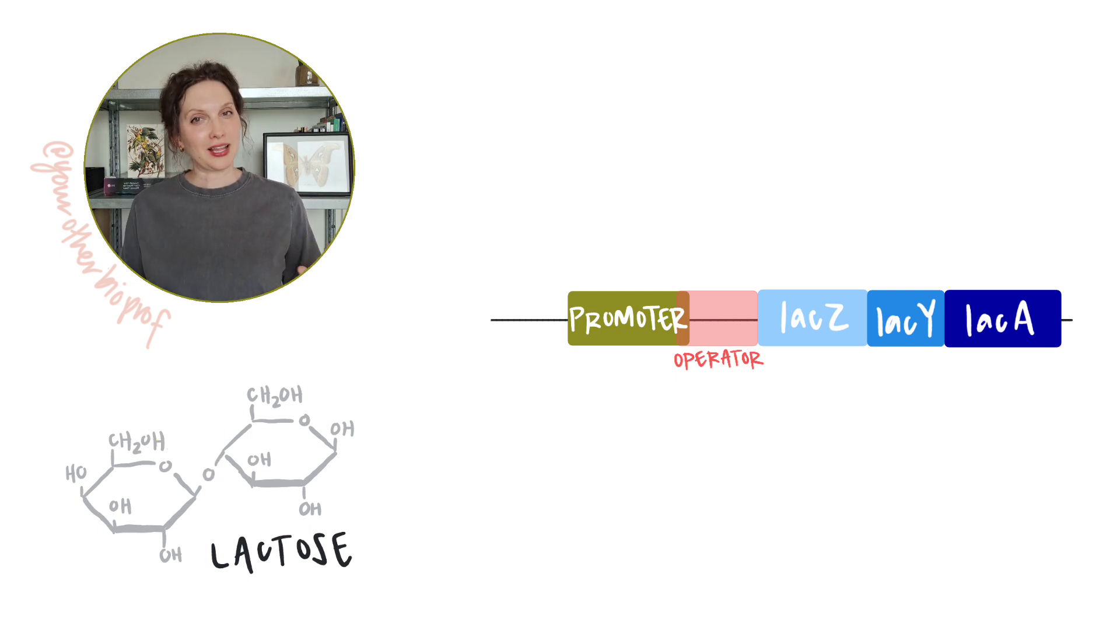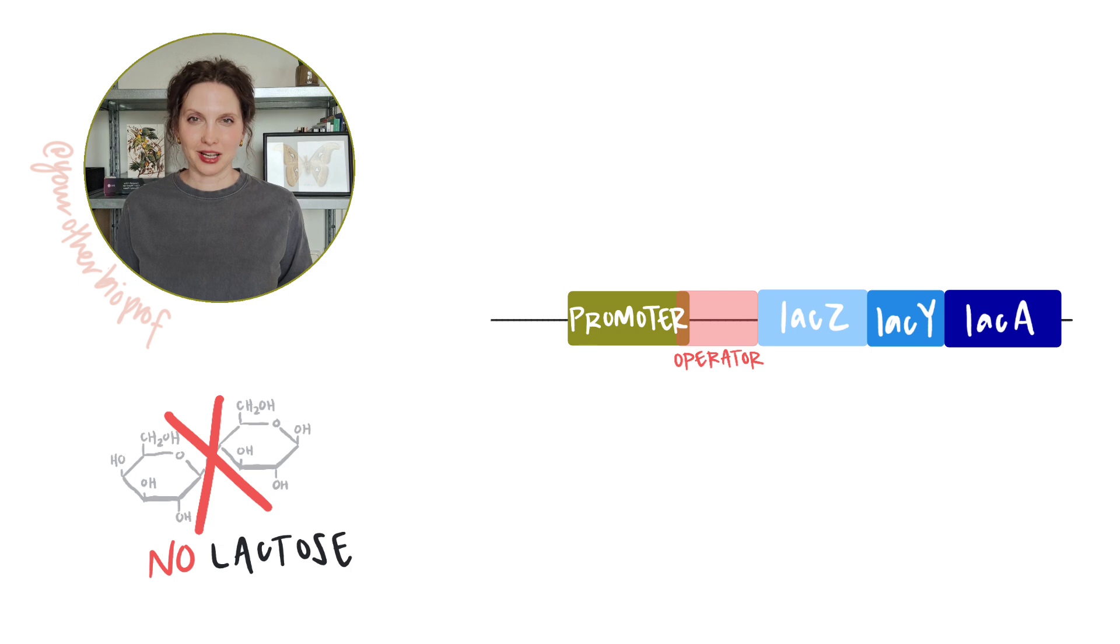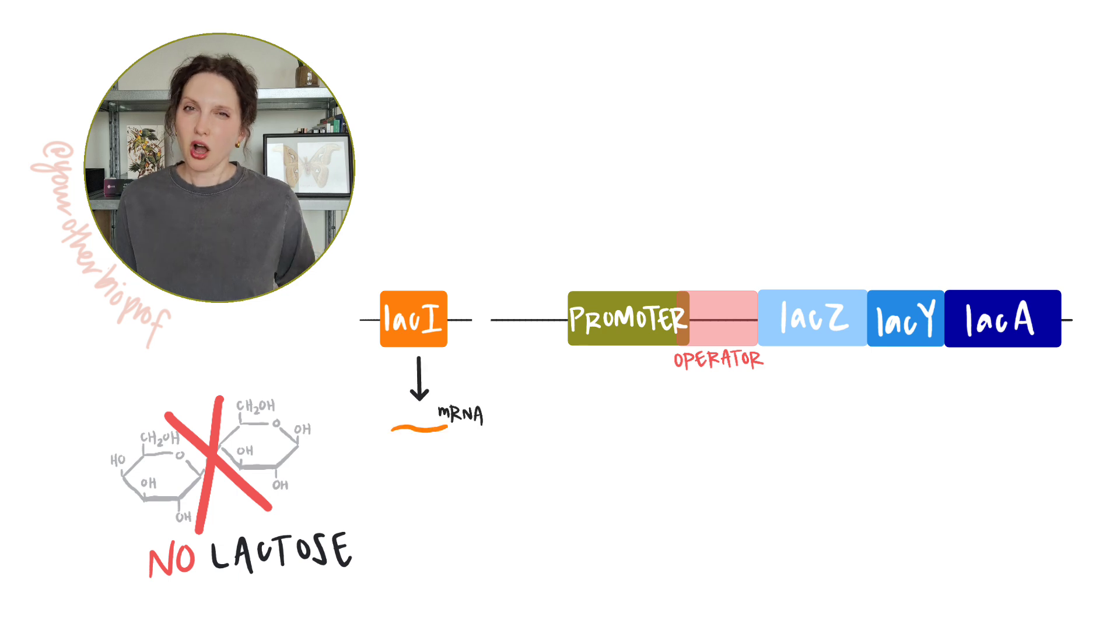Let's start with a no lactose scenario. So if we don't have lactose available, the cell doesn't need to transcribe the structural genes to make enzymes to break down something that's not there. So expression is off, but why is it off? Well, just upstream of the promoter, but not part of the operon itself, you'll find another gene, a regulatory gene. This gene is called lac I, and it is expressed constitutively. That means all the time. It's not dependent on lactose concentration. So transcription of this gene is always on, unaffected by lactose levels.